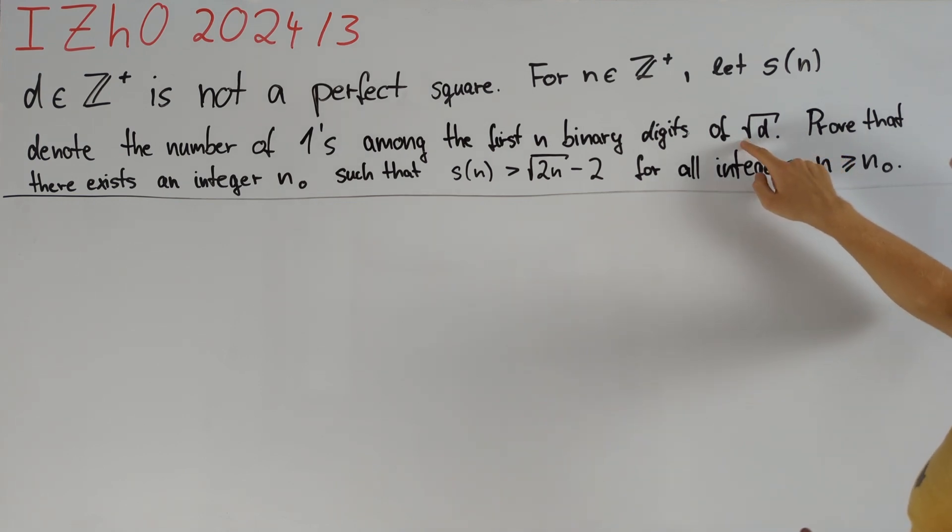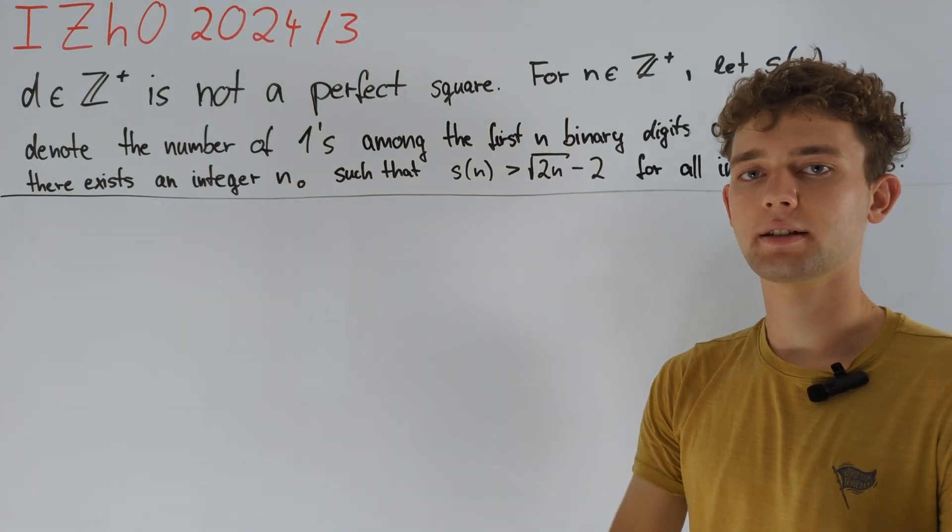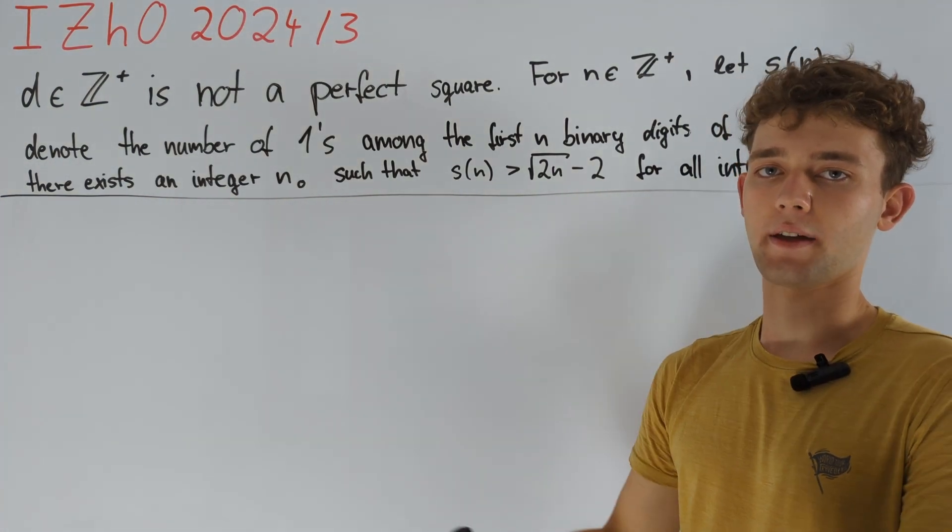Therefore, if we cut off this number square root of d after its first n binary digits, then after squaring we get something that is slightly smaller than d.